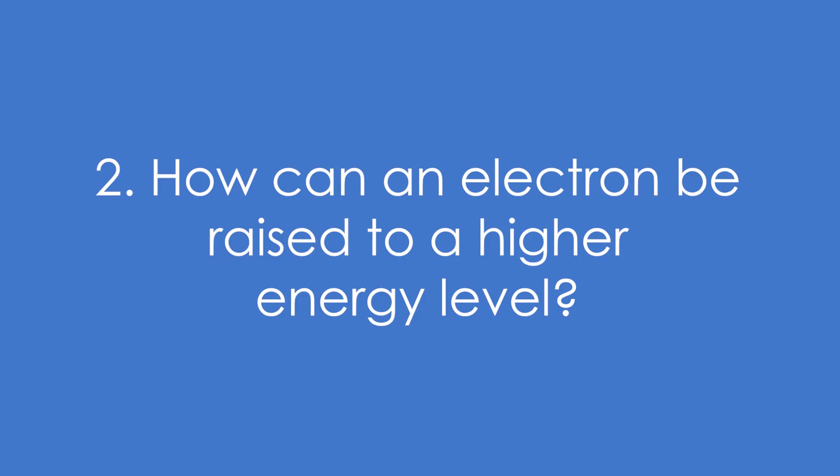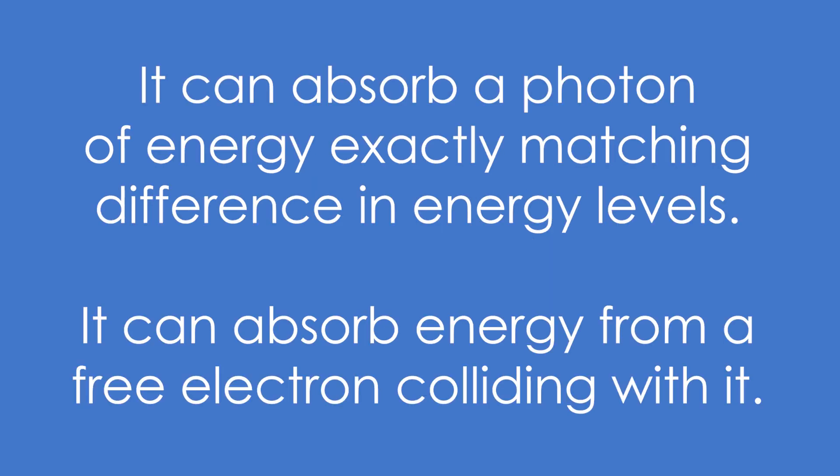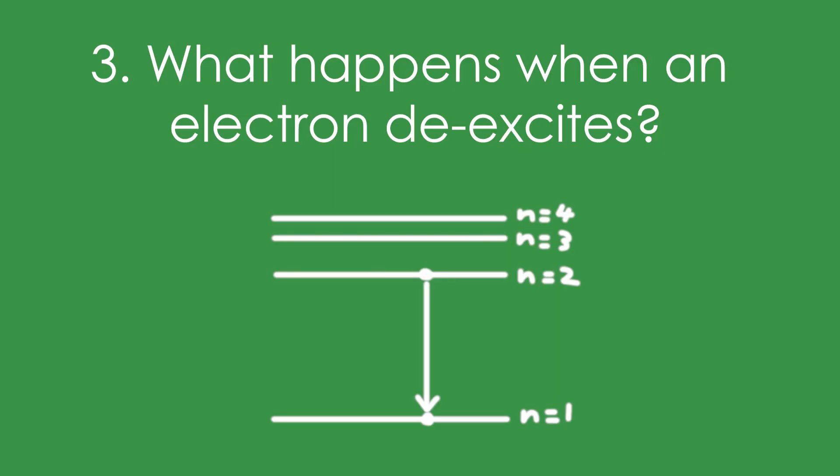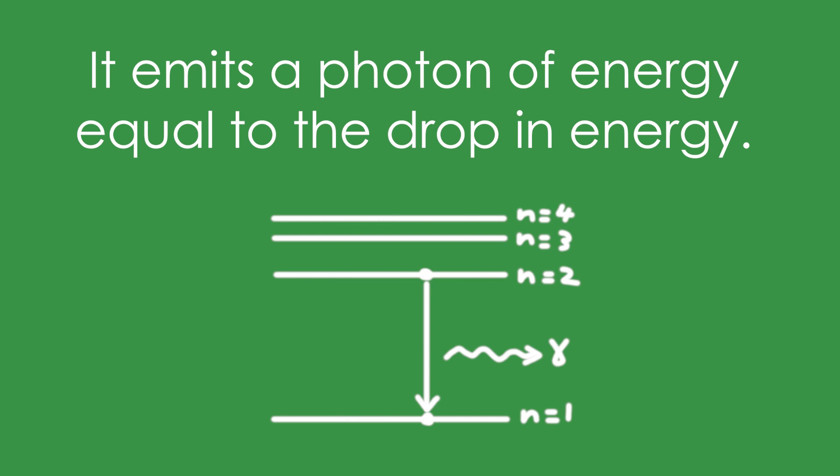Two, how can an electron be raised to a higher energy level? There are two ways. It can either absorb a photon of energy exactly matching the difference in energy levels, or it can absorb some energy from a free electron that collides with it. Three, what happens when an electron de-excites? It emits a photon of energy equal to the drop in energy.